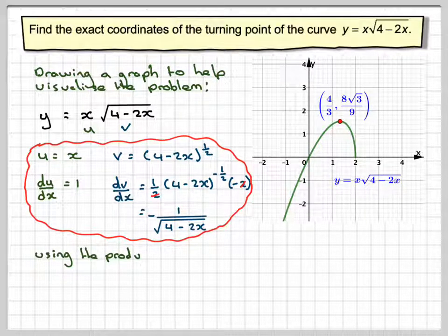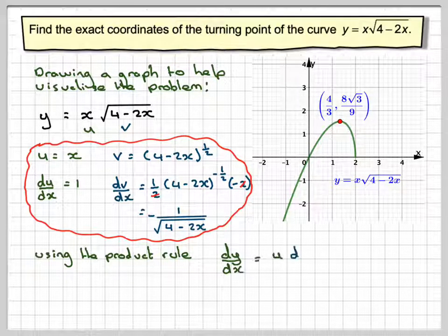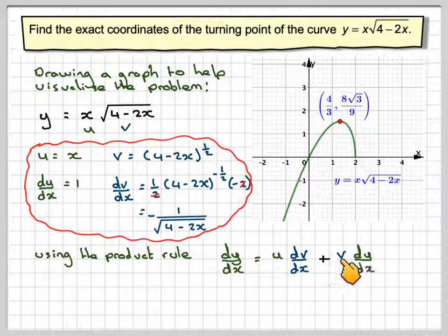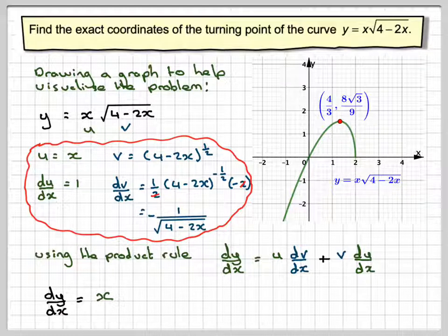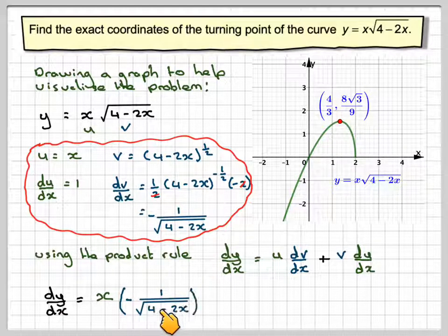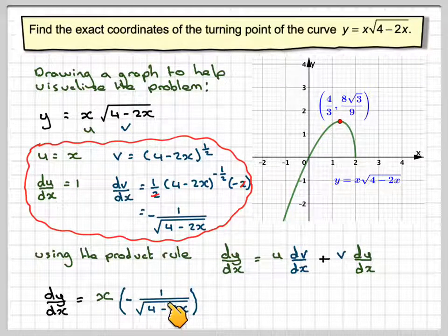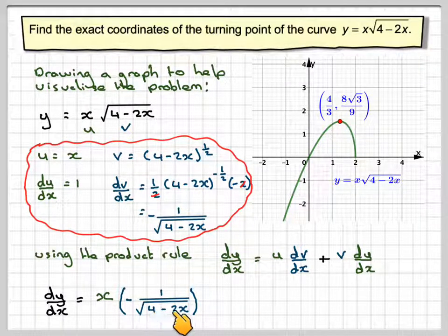So using the product rule. So dy by dx is u dv by dx plus v du by dx. We're going to have dy by dx is x times the derivative, which is going to be minus 1 over the square root of 4 minus 2x.